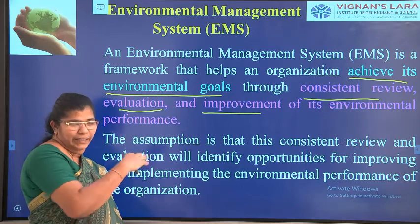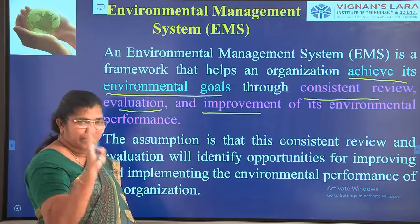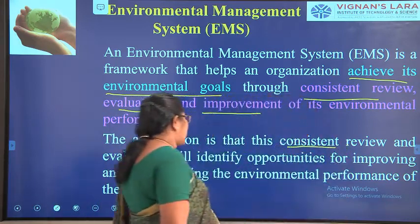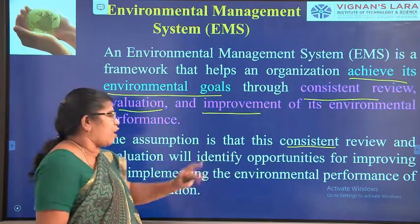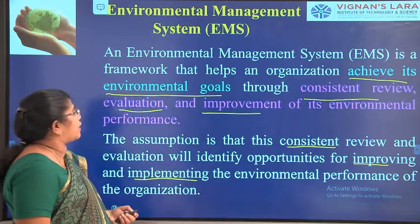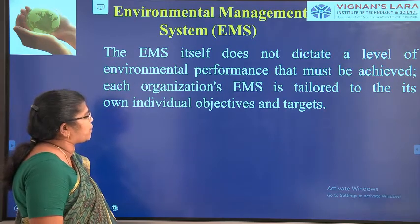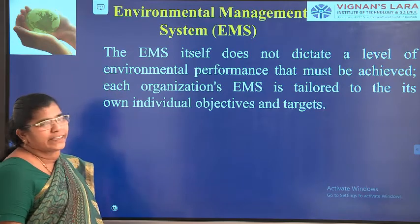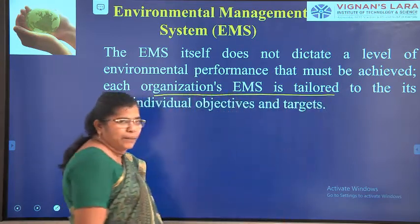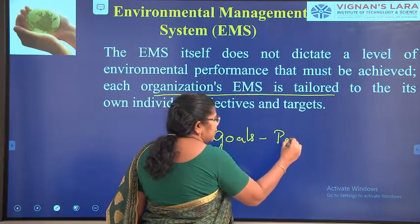With this continuous database, we can review what happened last month, last year, this year, and throughout the entire life cycle. It is a constant and consistent review — to evaluate and identify opportunities for improving and implementing the environmental performance of a project. Note that EMS itself does not dictate a level of environmental performance that must be achieved; each organisation has its own tailored environmental goals. For example, goals will be different for a paper industry versus a mall.